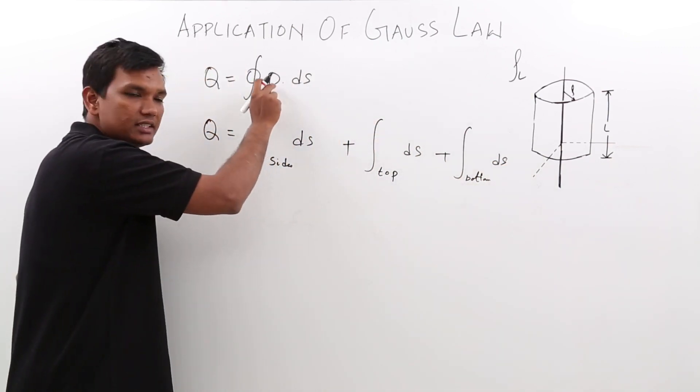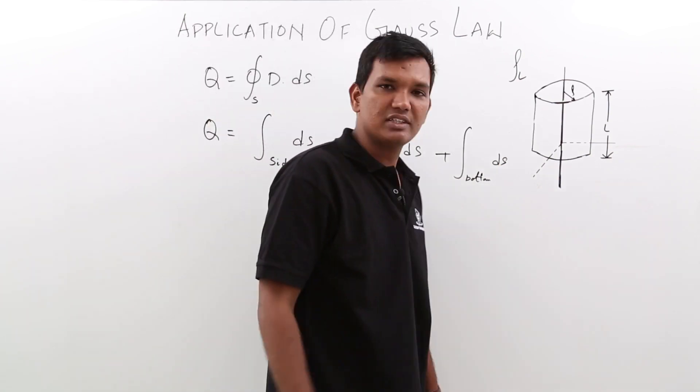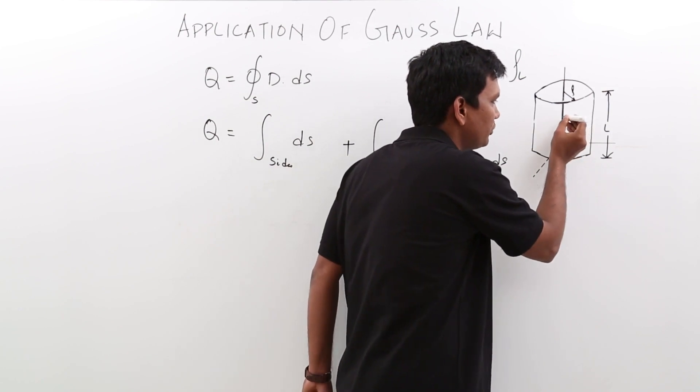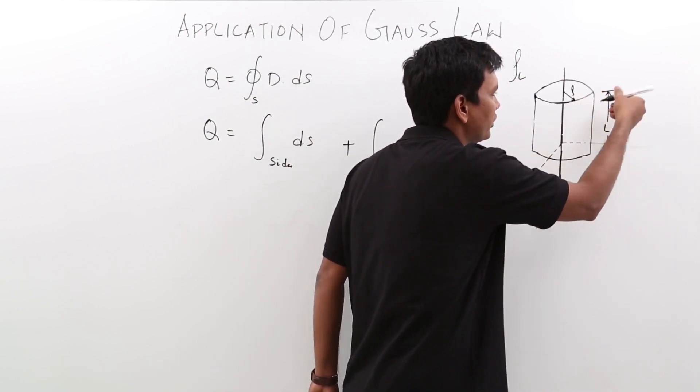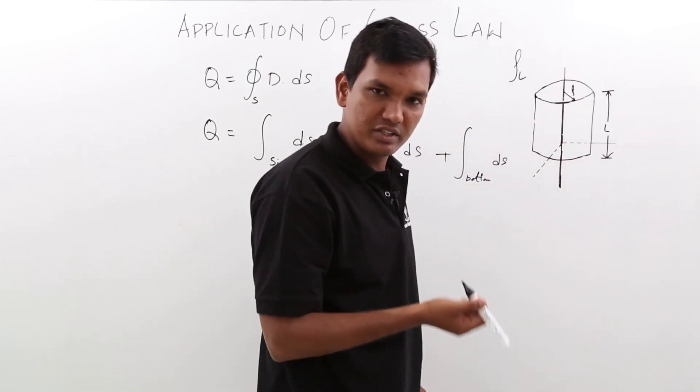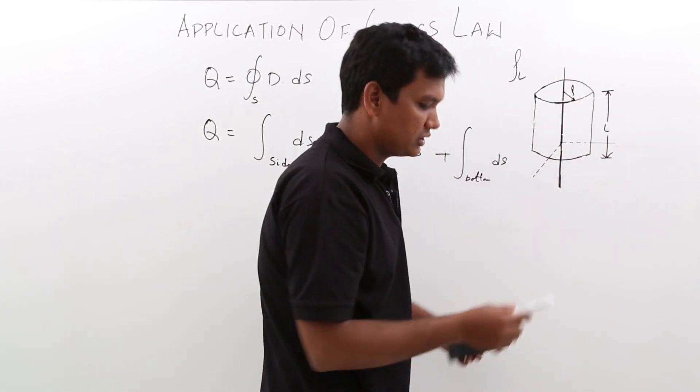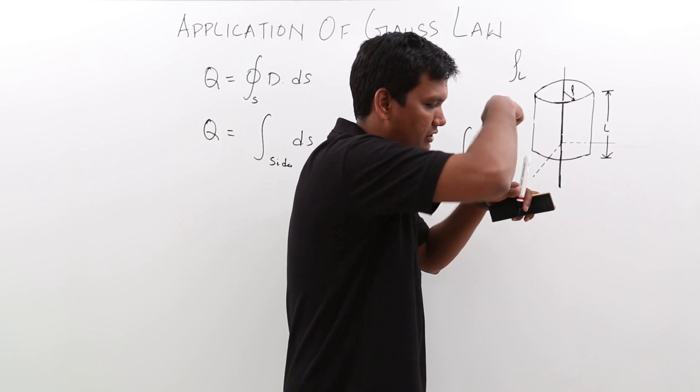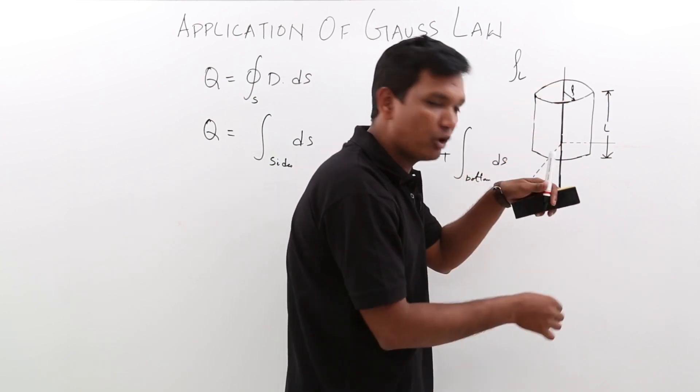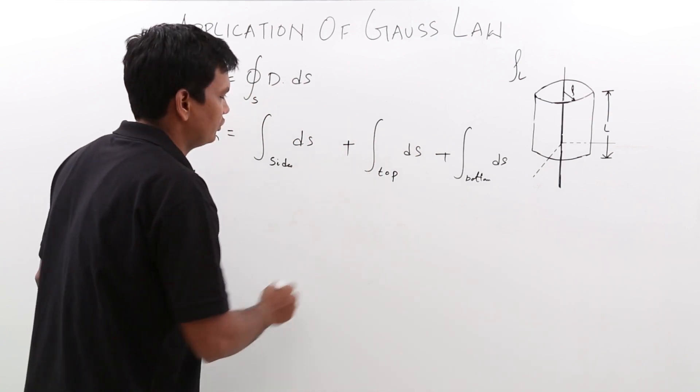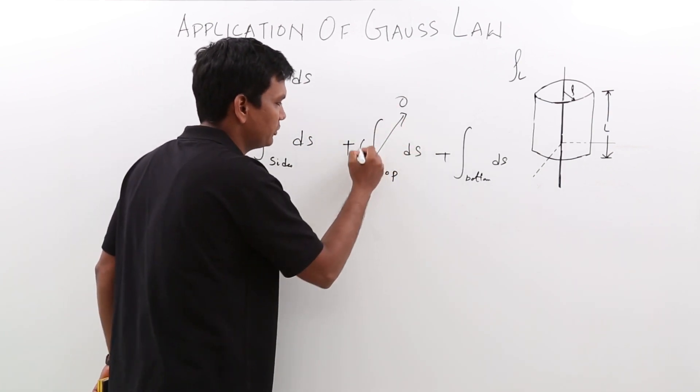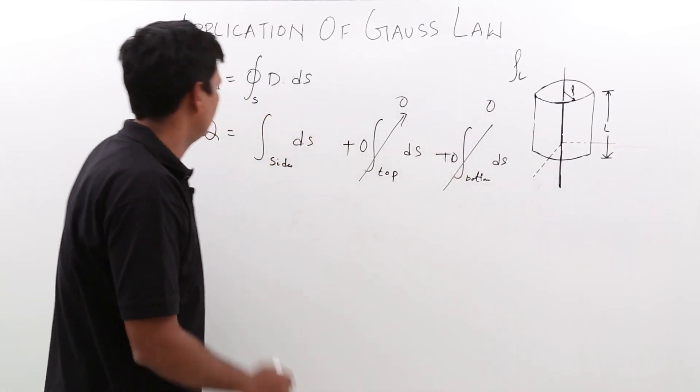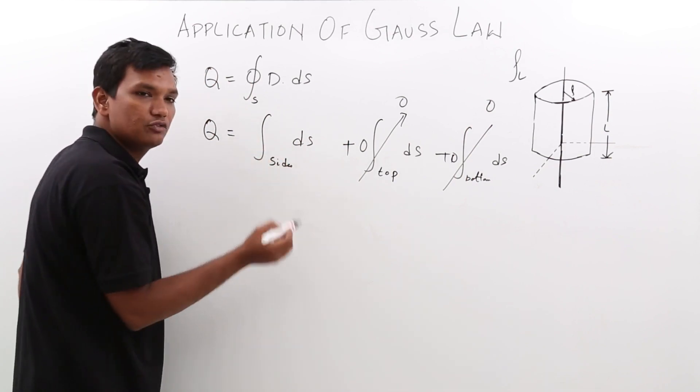What about the displacement flux density? As we know, the displacement flux density will be always pointing in a radially outward direction. So if this is the line charge it would be radially outward. In the top part it would be zero. For the bottom part again it would be zero. Basically the D would be zero for top and bottom. So the only part it exists is for the sides part.